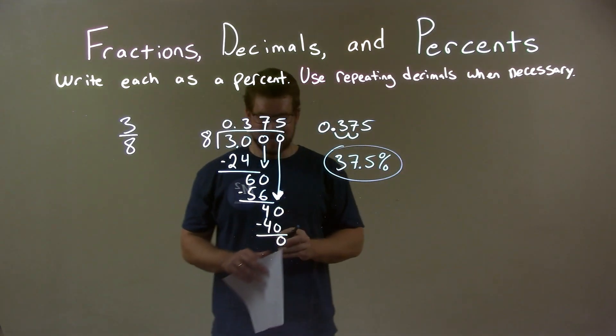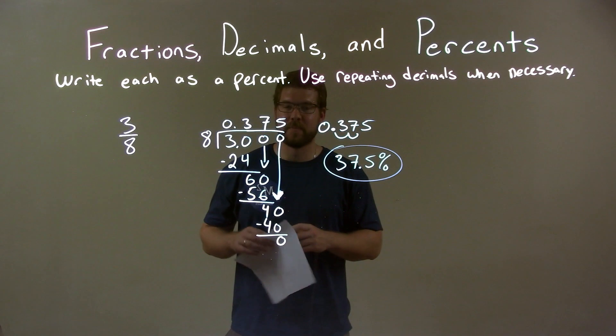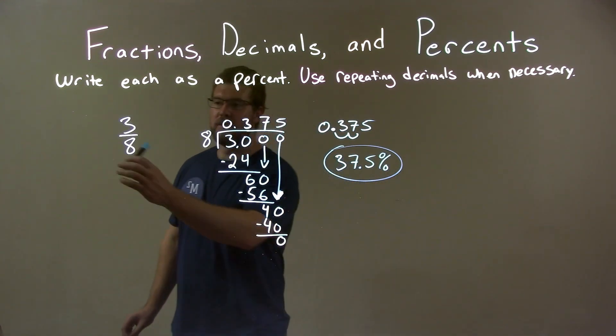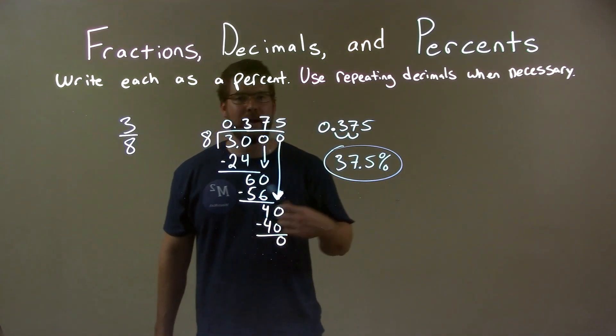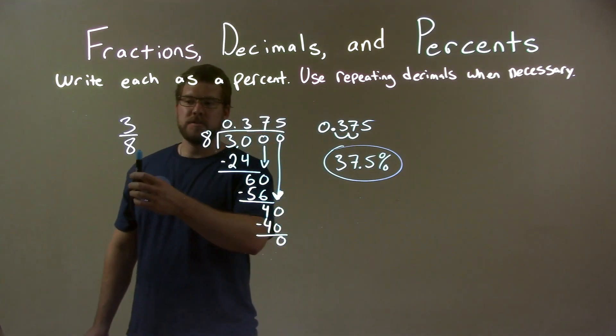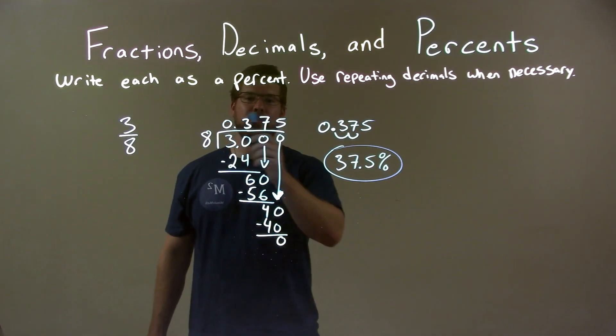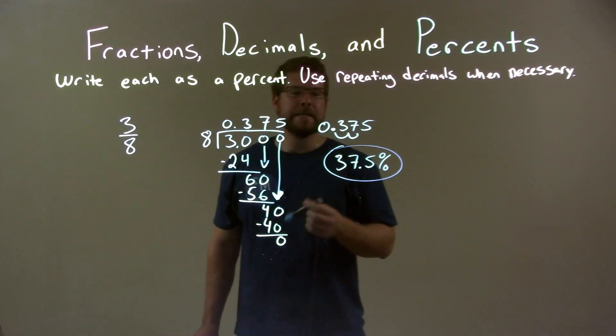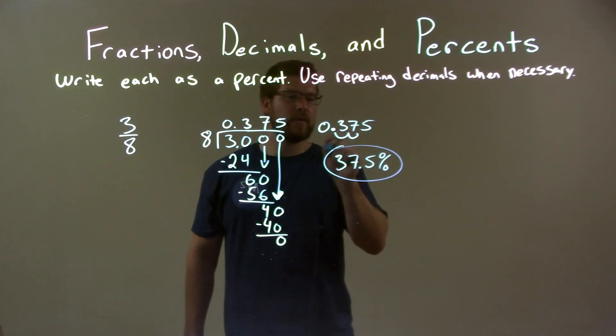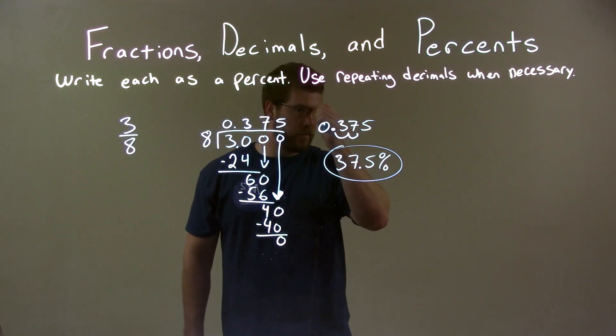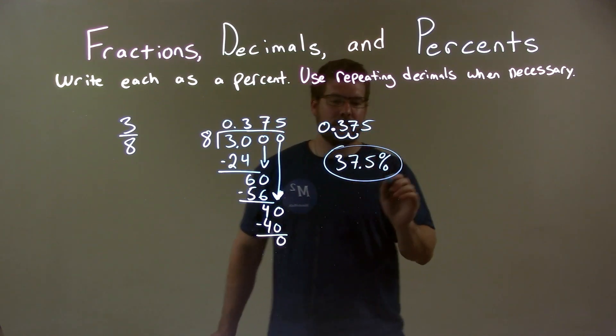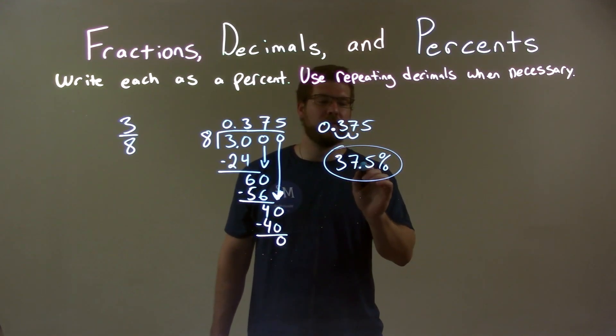Our final answer is 37.5%. So quick recap: We were given three eighths as a fraction, and we had to write it as a percent. I did long division of eight goes into three and got 0.375. I converted that by moving the decimal place two spots to the right, converting it to a percent. And so we got our final answer of 37.5%.